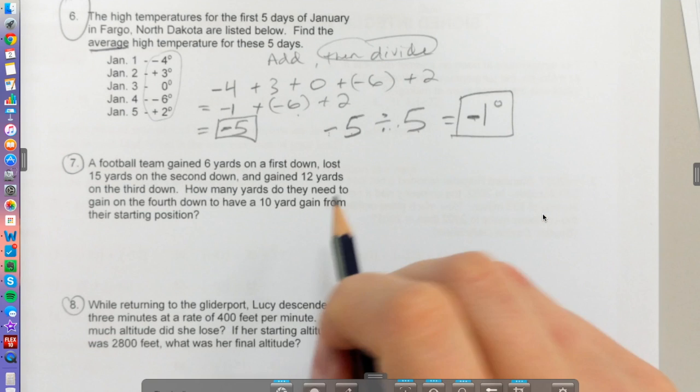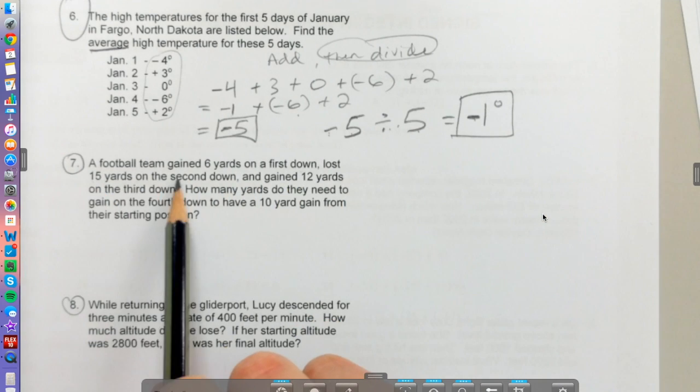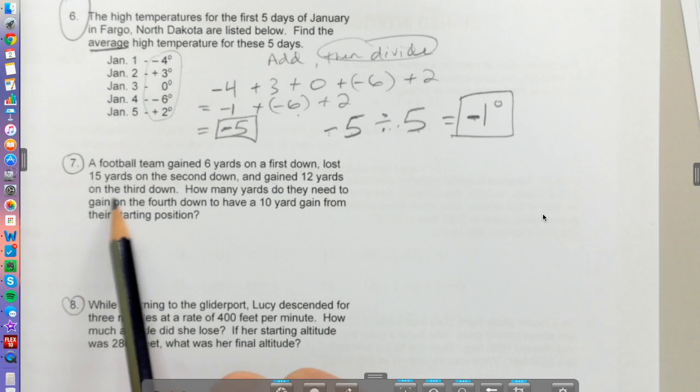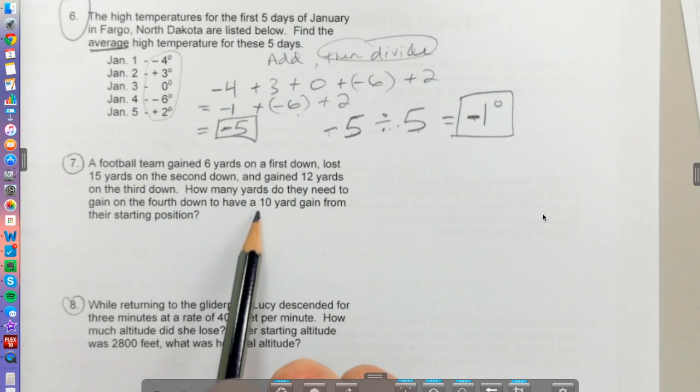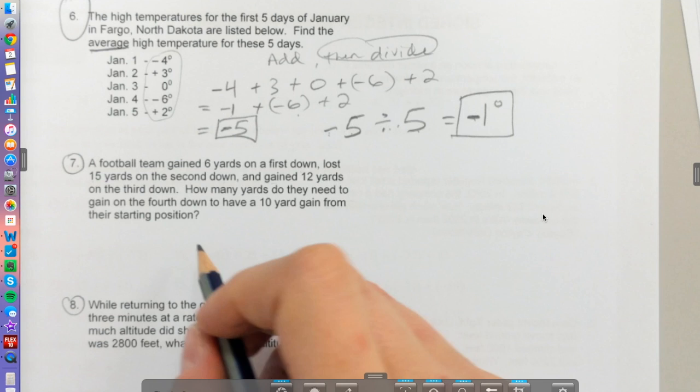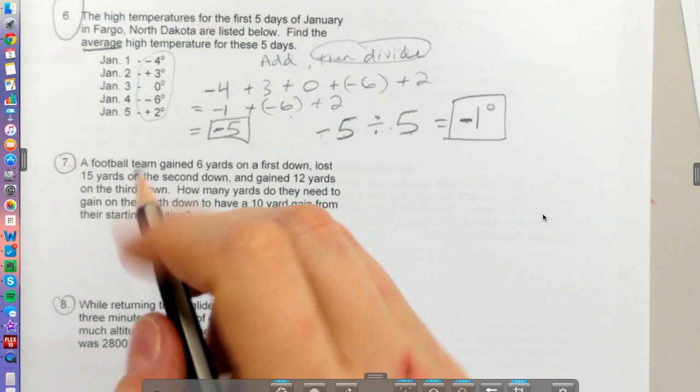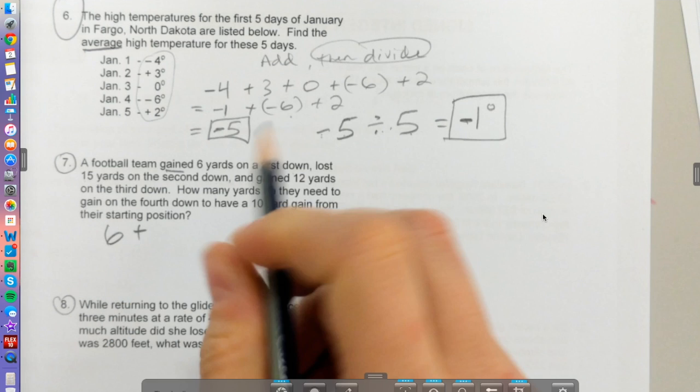A football team gained 6 yards on the first down, lost 15 yards on the second down, and gained 12 yards on the third down. How many yards do they need to gain on the fourth down to have a 10 yard gain from the starting position? Let's see where they are first. All these types of problems are about just adding those integers together.